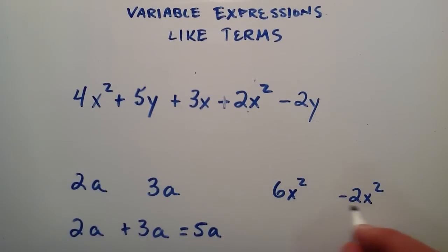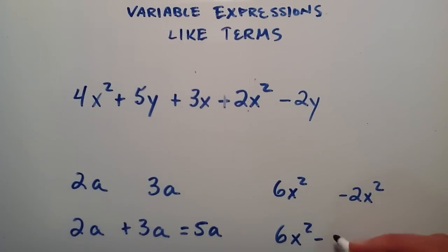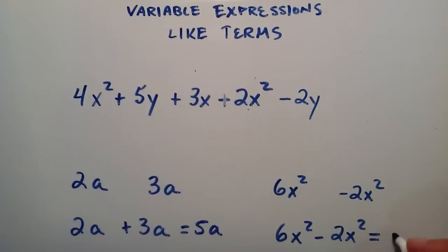And if you look at this example here, we could write a problem like this: 6x squared minus 2x squared. Well, since they're both x squareds, then we can look at the coefficient 6 and subtract the coefficient 2. 6 minus 2 is equal to 4, and we just write down the x squared, since they're like terms.